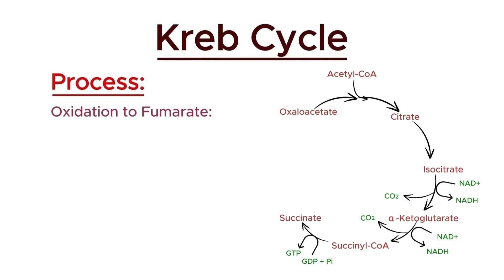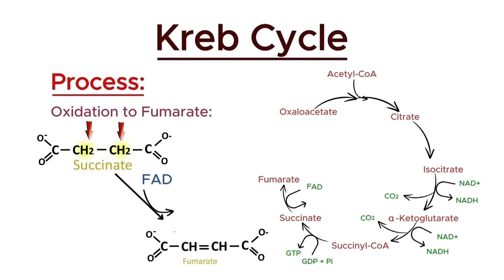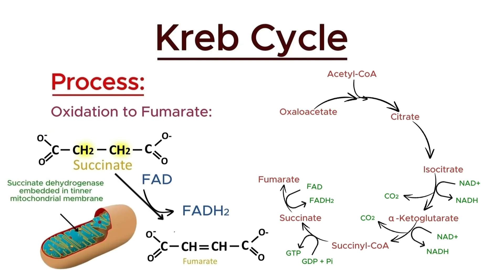In the sixth step of the Krebs cycle, succinate is oxidized to fumarate. This reaction is catalyzed by the enzyme succinate dehydrogenase. During this process, two hydrogen atoms are removed from succinate and transferred to the electron carrier flavin adenine dinucleotide, reducing it to FADH2. This step is unique because succinate dehydrogenase is embedded in the inner mitochondrial membrane and also participates in the electron transport chain. The production of FADH2 is important as it will be used in the electron transport chain to generate ATP.